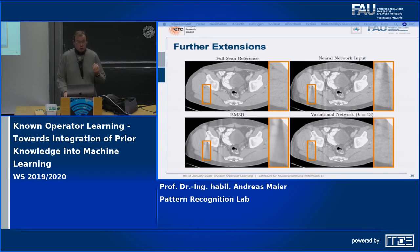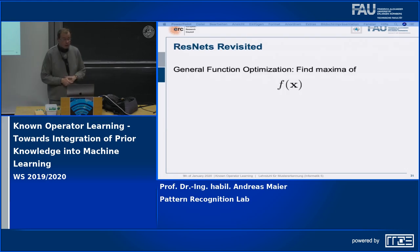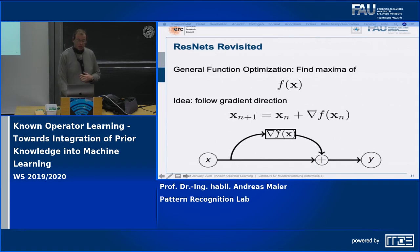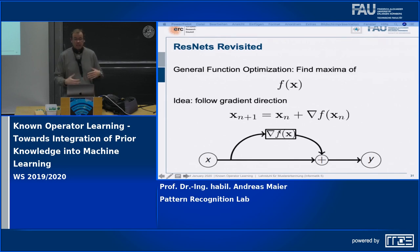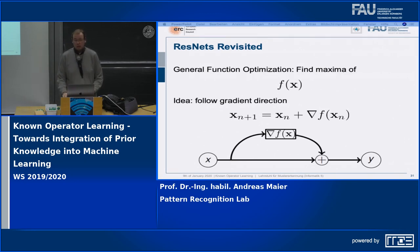This also has a very nice relation to the concept of ResNets. ResNets always take this form: some input, and you are learning some kind of side branch that is added back to the original input to produce the output of the network. Whenever you have this kind of variational network structure, a ResNet always emerges — every variational network is intrinsically a ResNet because of this gradient descent type of procedure. You can also say: if you had ResNets with the same function block every time, that ResNet would approximate the gradient of some unknown energy function you're trying to optimize.